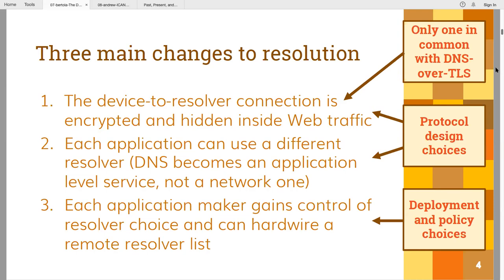The third effect creates the most concern. It's not really a matter of design or protocol, but a consequence of the first two in the way DOH is being deployed — especially in the initial deployment by Mozilla in Firefox. This means the application maker, and especially browser makers, become the gatekeeper, the controller of the choice of resolver being used to resolve the user's DNS queries. They now have abilities they didn't have before — a resolver list, a single resolver as default, or more than one resolver.